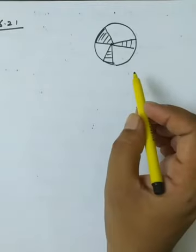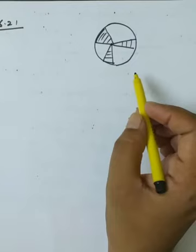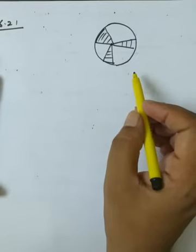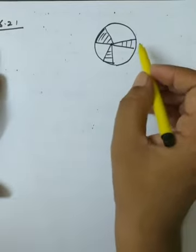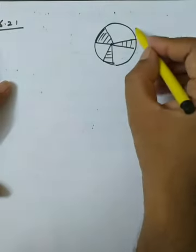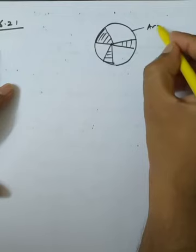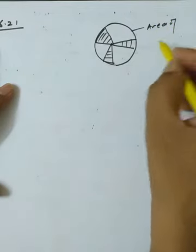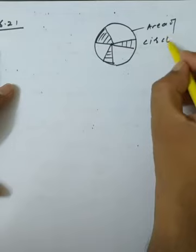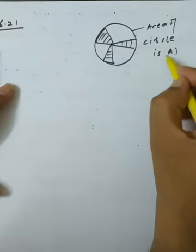Now question 6.21: the blades of a windmill sweep out a circle of area A. The area of the circle is given as A.